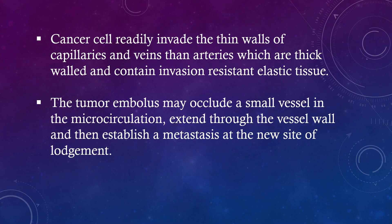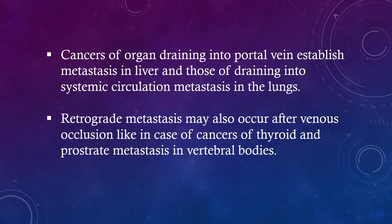The tumor embolus may occlude a small vessel in the microcirculation, extend through the vessel wall and then establish a metastasis at the new site of lodgement. Cancers of organs draining into the portal vein establish metastasis in the liver, and those draining into the systemic circulation metastasize in the lungs. Retrograde metastasis may also occur after venous occlusion, as in cancers of the thyroid and prostate metastasizing to vertebral bodies.